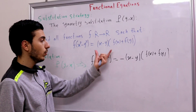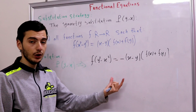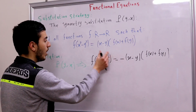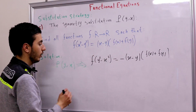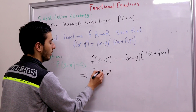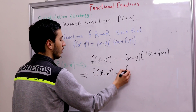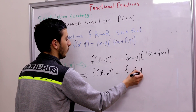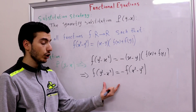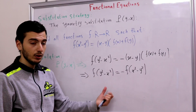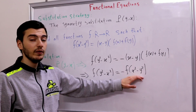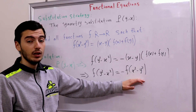Now if we compare these two functional equations we get a new, simpler relation: f(y² - x²) = -f(x² - y²). Doesn't this remind you of the relation f(some value) = -f(negative of that value)? Well, that reminds us of the odd function.